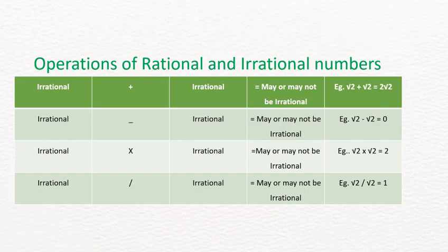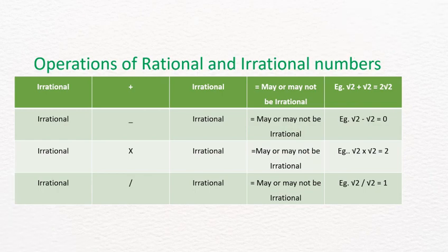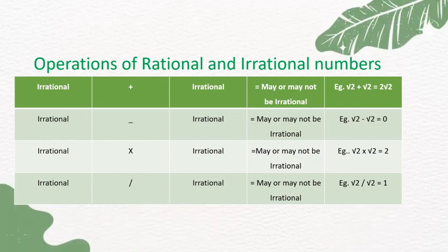For example, √2 ÷ √2 = 1, which is a rational number. But 2√2 ÷ 3√3 gives an irrational number.